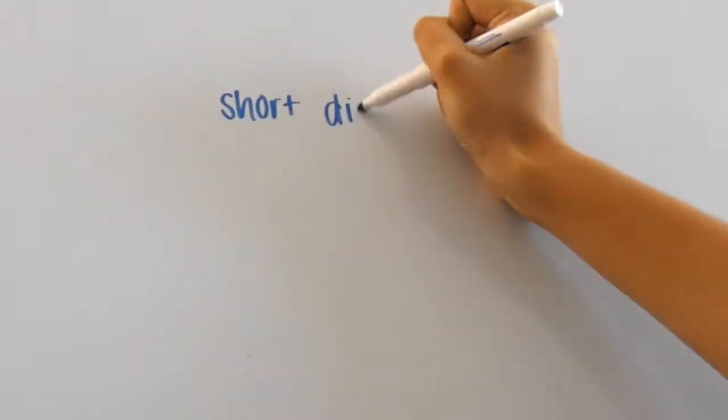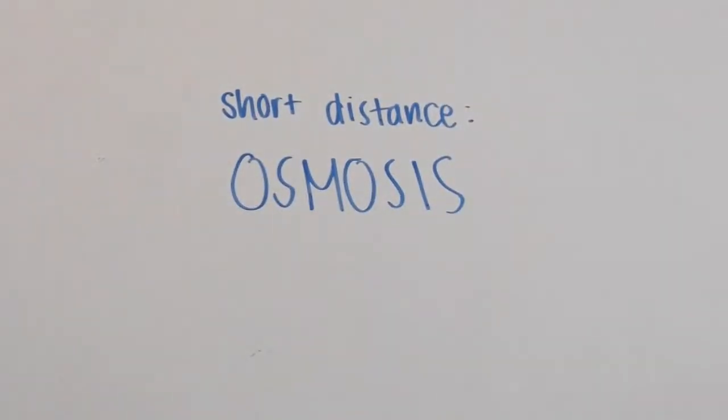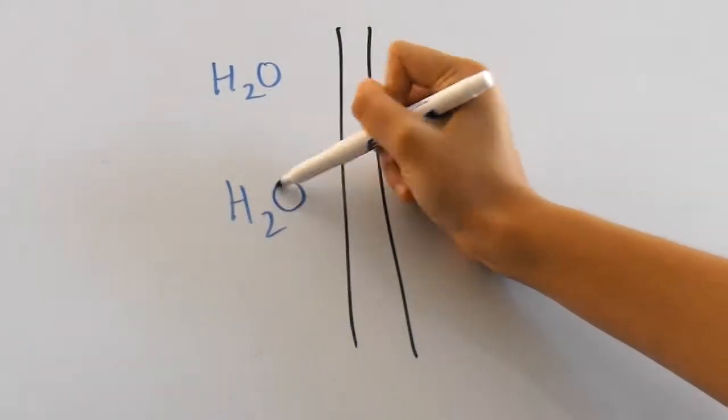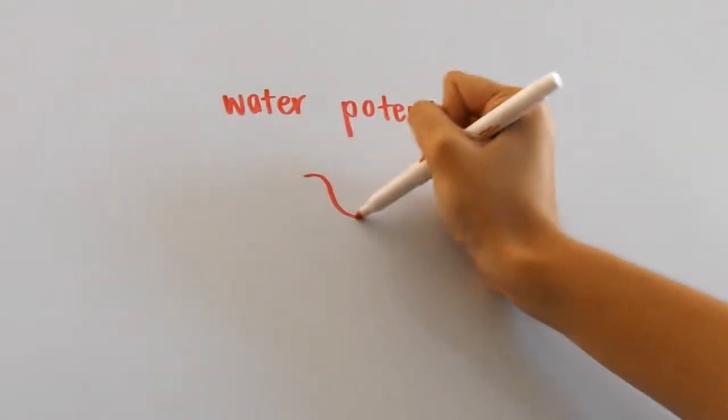Short distance transport is pretty easy to understand, it occurs through osmosis. Osmosis is the diffusion of water, usually across a membrane. This is powered by something called water potential, which determines the direction of where the water will flow.